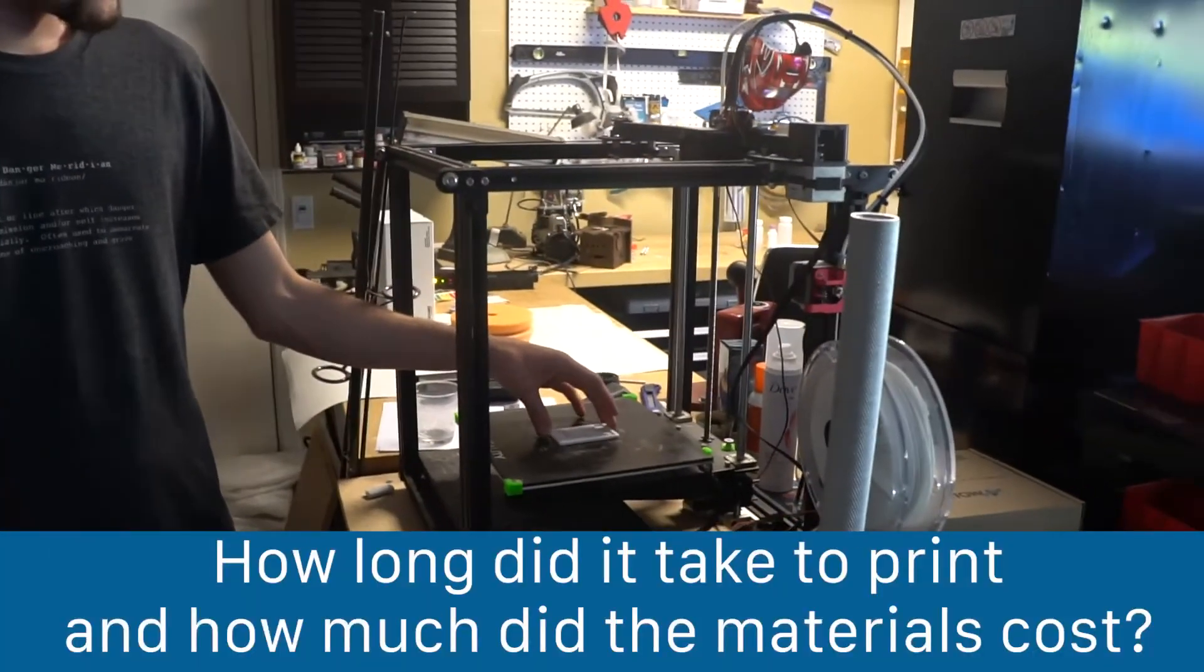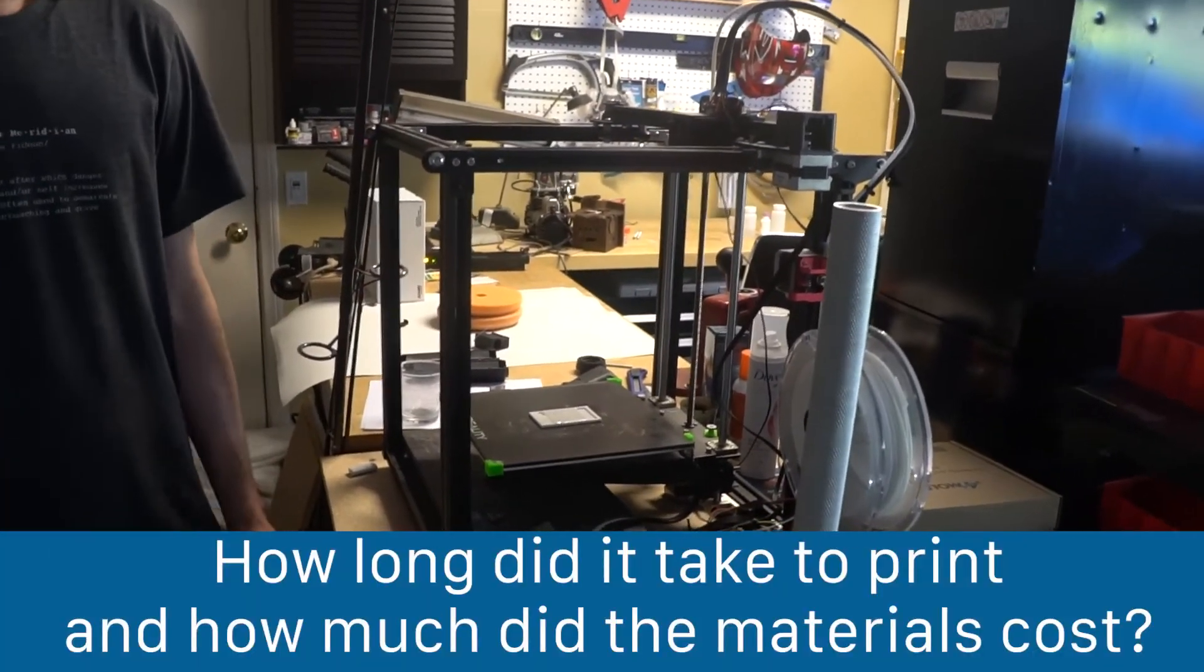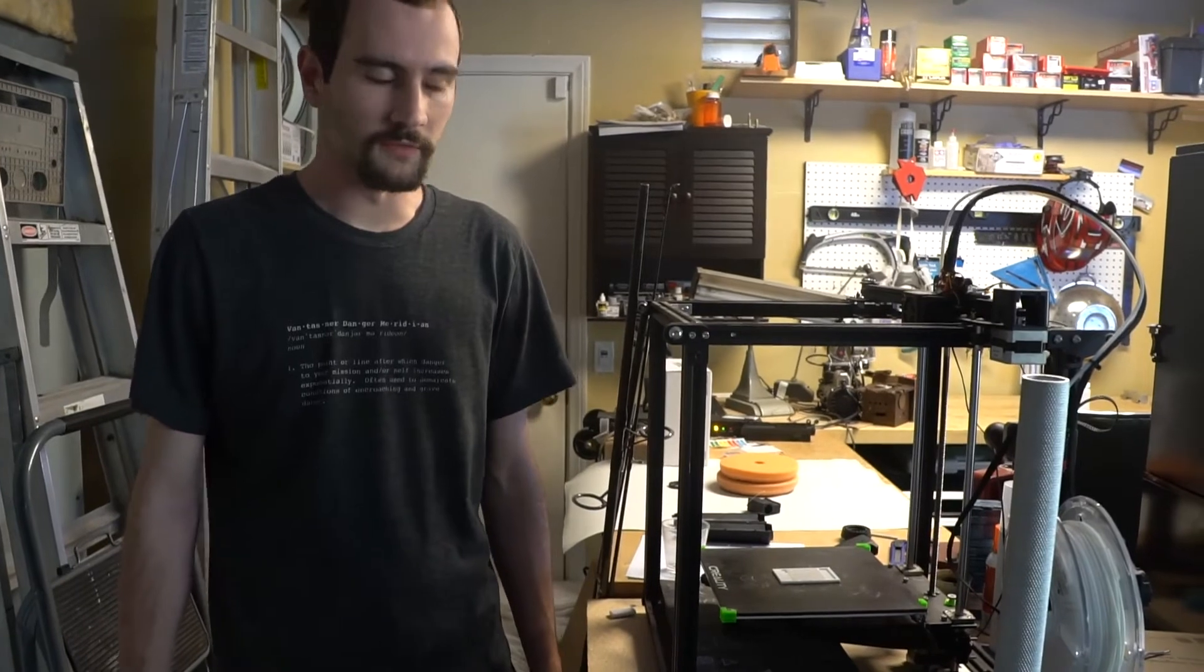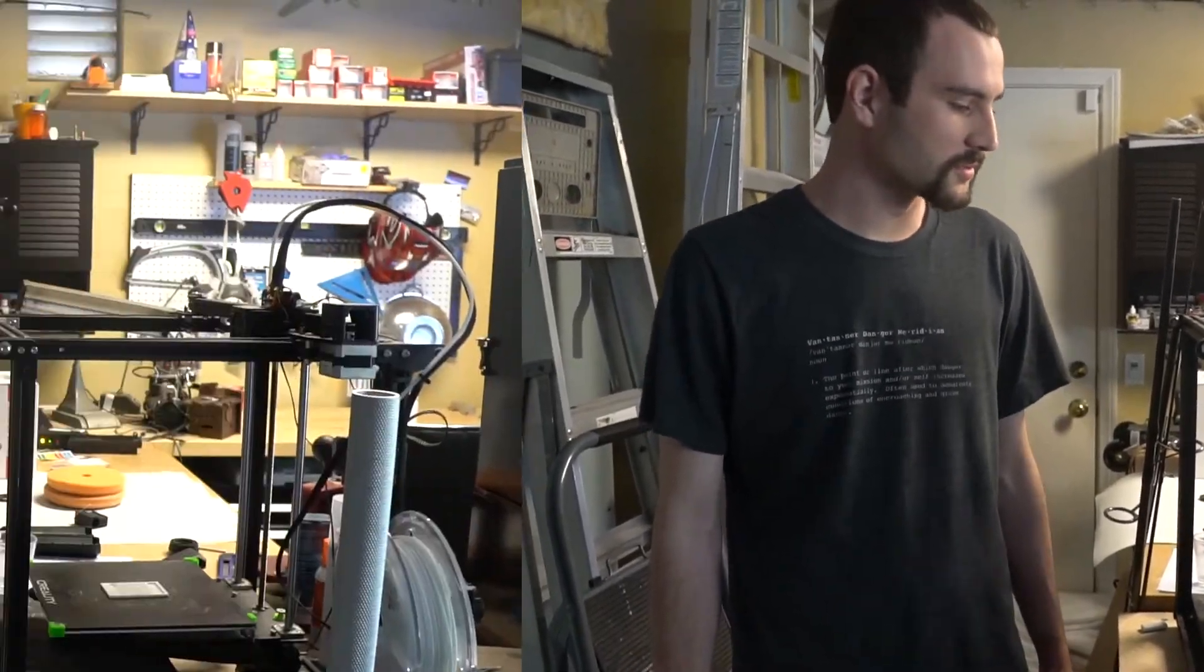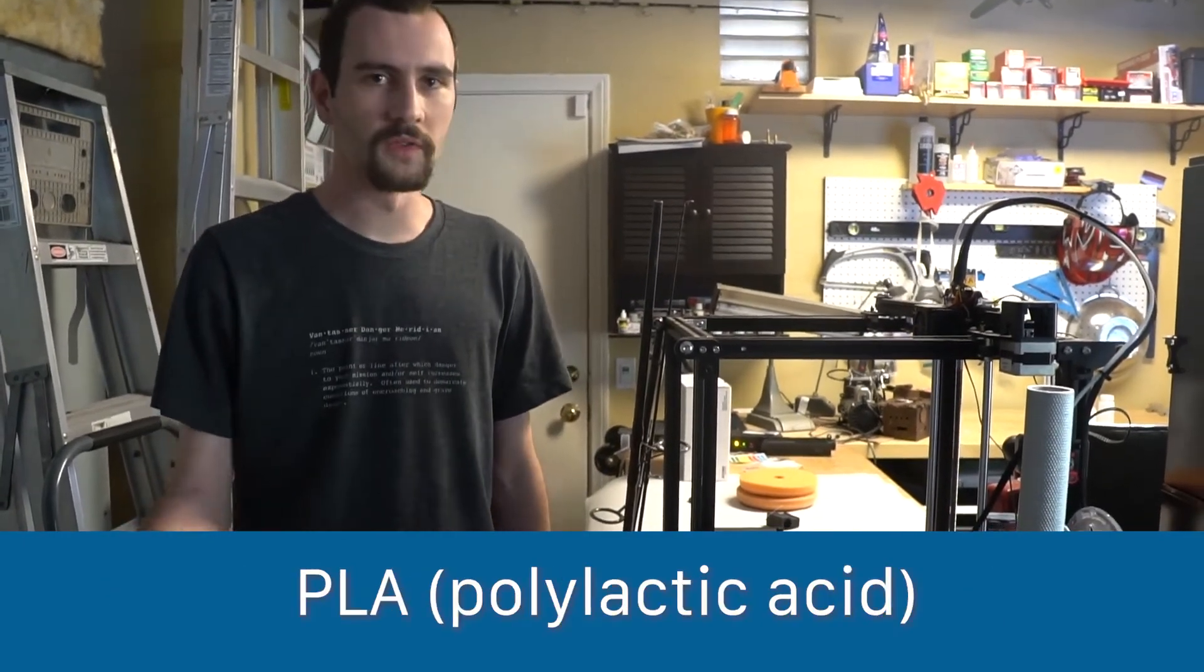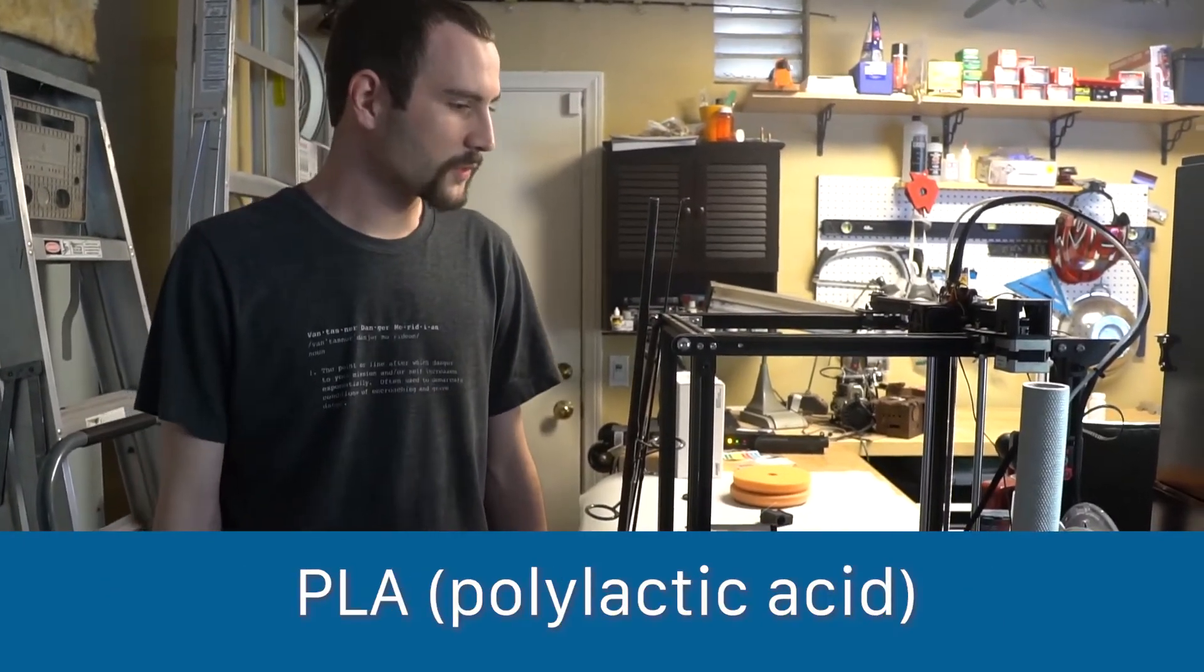How long did it take to print it and how much did the materials cost? It took about 20 to 30 minutes to print, so not very long, it's a really short print time. Material cost was 25 cents at most. What is the materials made of? The material is made out of PLA, which stands for polylactic acid. It's a very common 3D printer material. You can find it really cheap online, so it's not expensive at all.